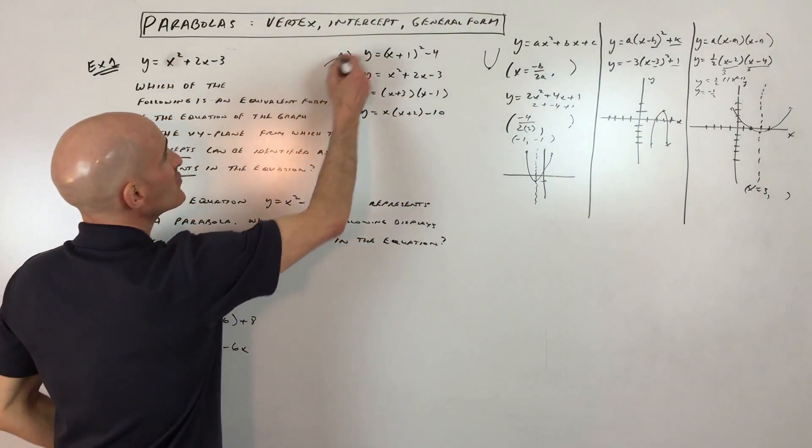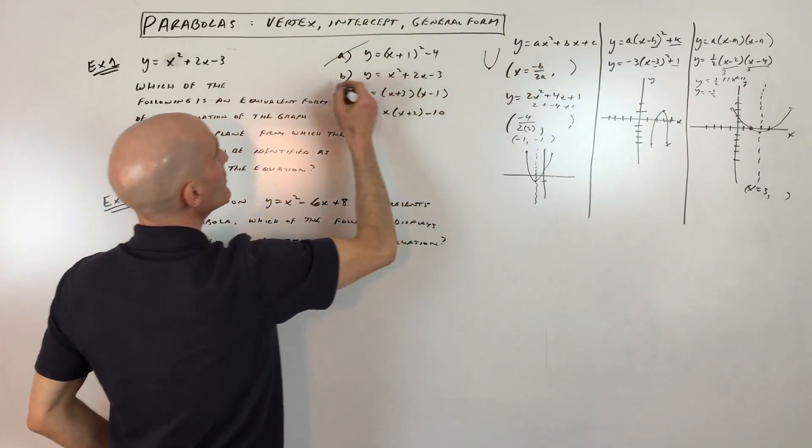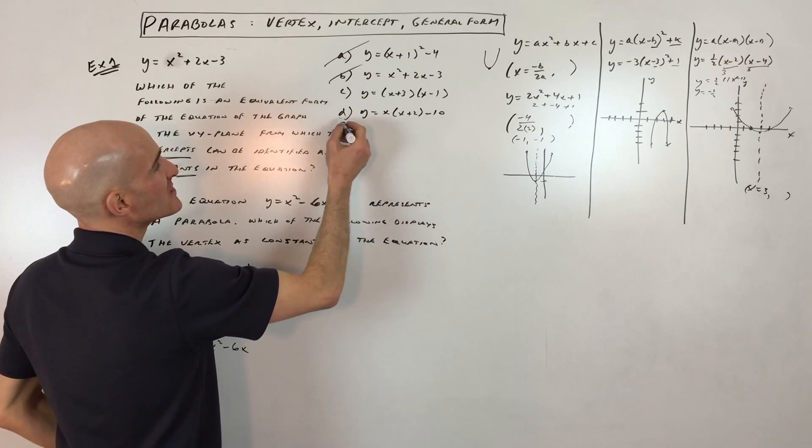Well, you can see this first one is in vertex form. That's this form right here. This one's like in the general form, so it can't be that one. This one, I'm not even sure what form this is in.